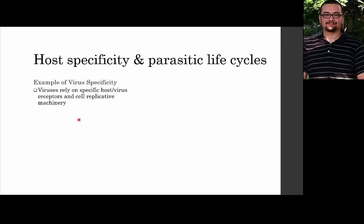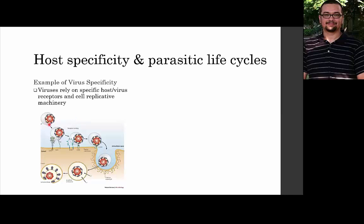Getting back to host specificity: a virus infects a host via very specific proteins. If the virus doesn't see that particular protein, it will no longer be able to infect the cell — that's the end of the infection and replication cycle. That's why a pig virus will generally only infect pigs and a human virus will only infect humans. So when you're sick with a cold, there's no chance you're going to pass that cold on to your dog.